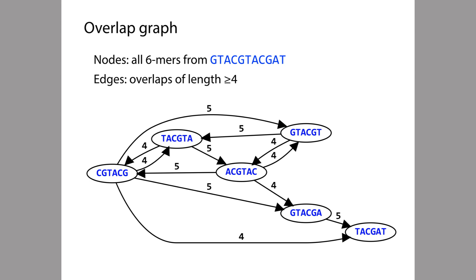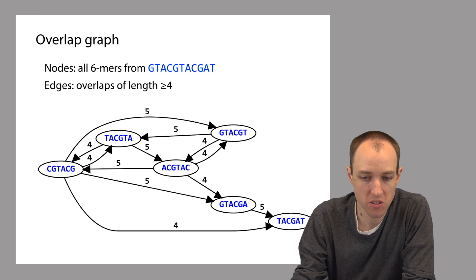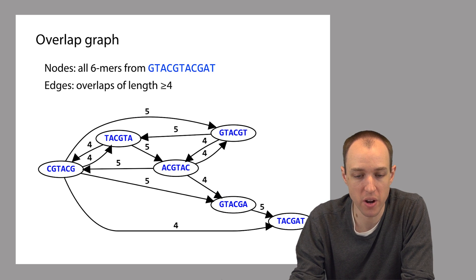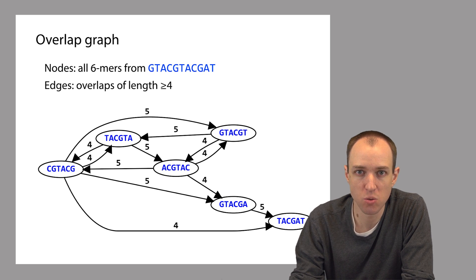Given that threshold, we can write out the entire overlap graph, shown at the bottom of this slide. The nodes correspond to reads and are labeled accordingly. The directed edges correspond to overlaps, and each edge is labeled with the length of the corresponding suffix-prefix match. For example, one edge is labeled 5 because a length-5 suffix 'ACGTA' matches a length-5 prefix 'ACGTA'. You can start to see how this graph could be very useful as we try to figure out the sequence of the original genome.